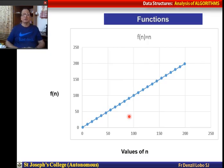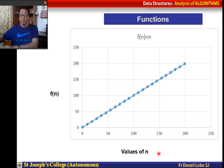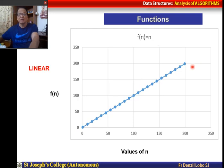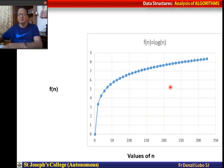Before getting into the asymptotic notations, let us understand some functions we will deal with. Here we have a function where the number of data items is n, and f(n) = n. For every value of 50, f(n) is also 50. This is a linear equation — a gradual, linear increase.